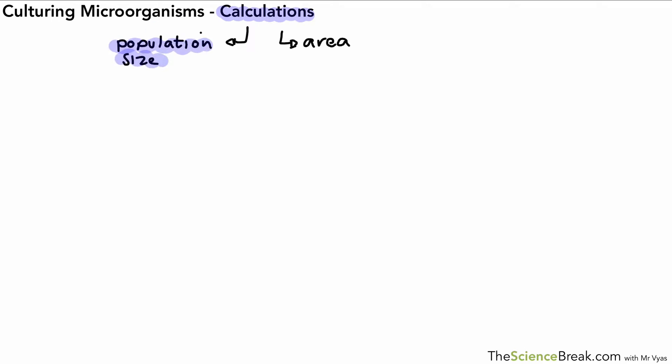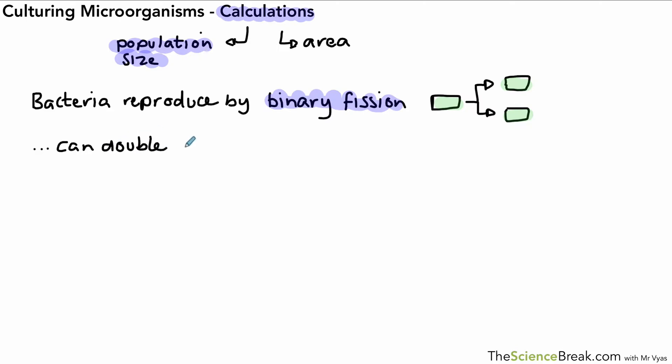Before we do the population size calculation, we need to remember how bacteria divide. They reproduce by a process called binary fission, which is similar to mitosis. We have one cell that can divide into two new cells, and those two can divide into four. If conditions are favorable, this can happen as rapidly as once every 20 minutes. The number of bacteria can double every 20 minutes with the right temperature and nutrients.